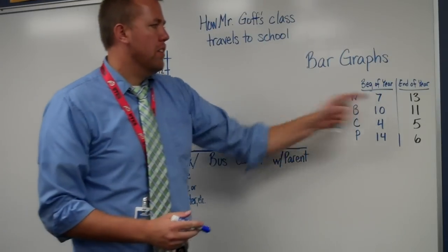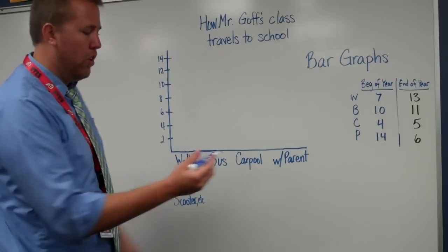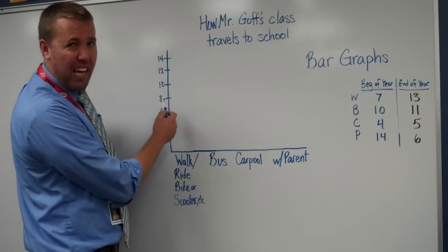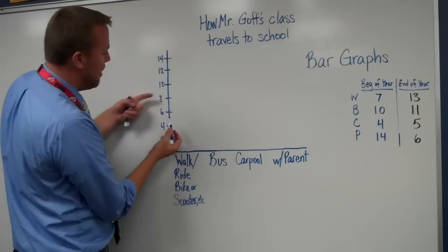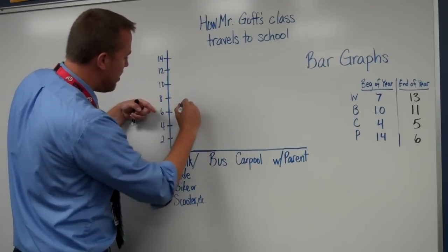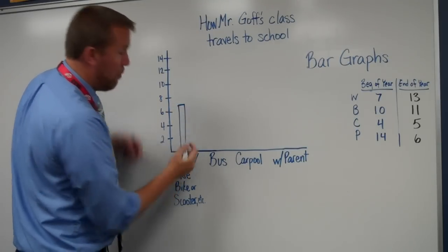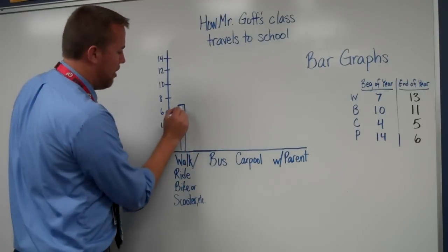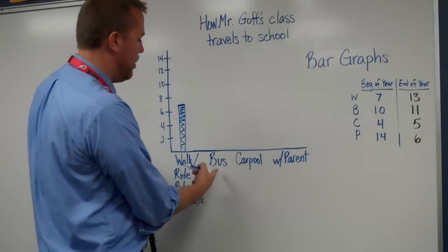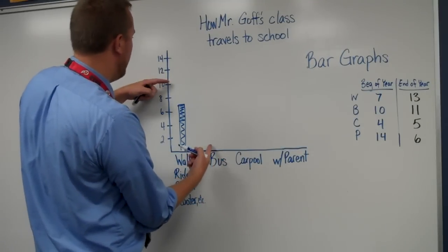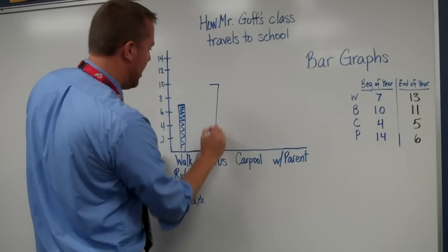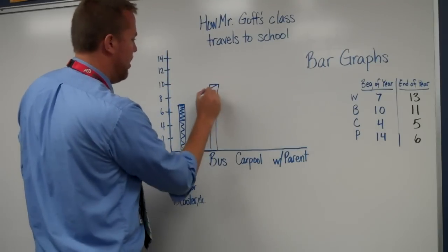Seven students said they walked or rode their bike. So I come up here — 7 doesn't have its own line, but it's right in between 6 and 8, so right over that. I make a bar because we're doing bar graphs and color it in. Next, the bus: data shows that 10 students rode the bus. So I'd come up to 10, right over there, and make a bar over the bus.